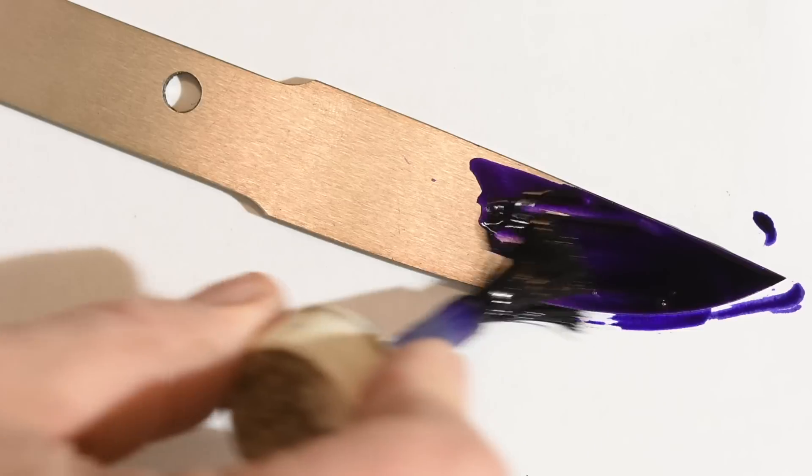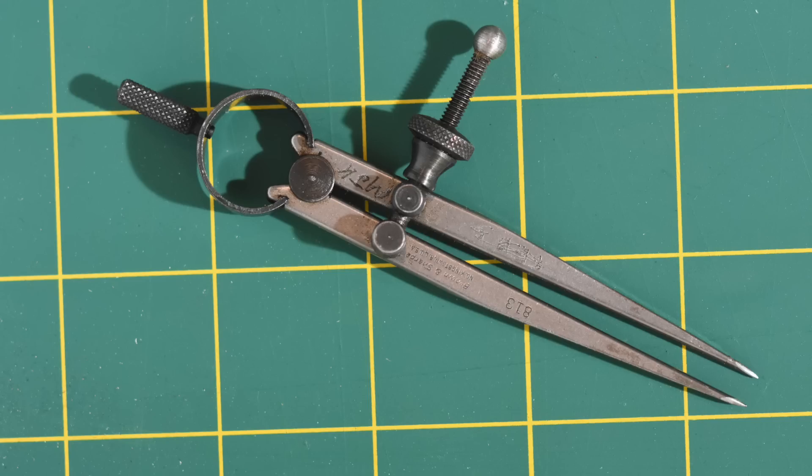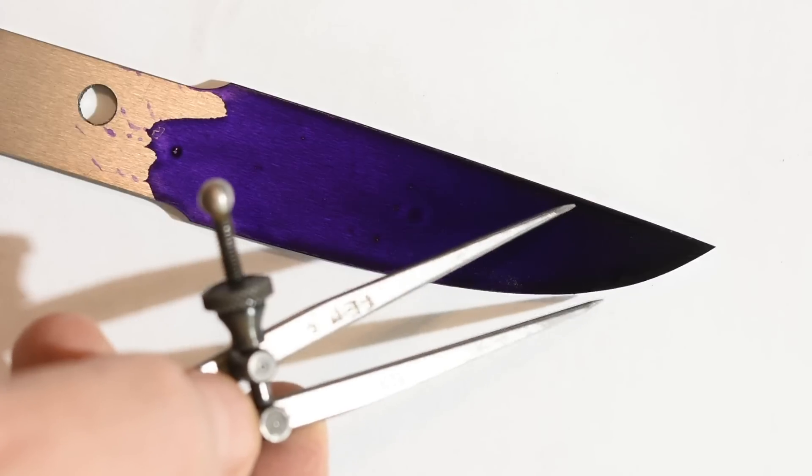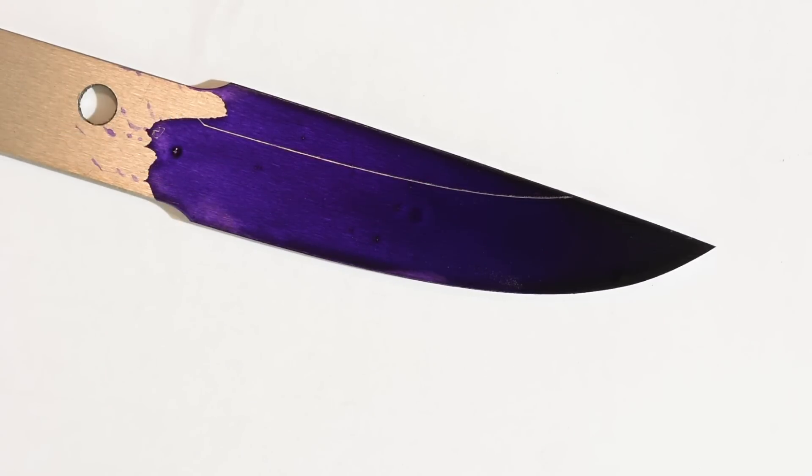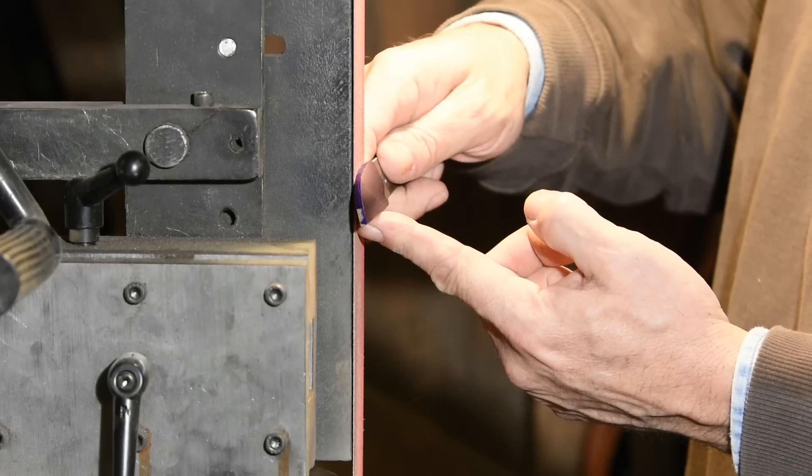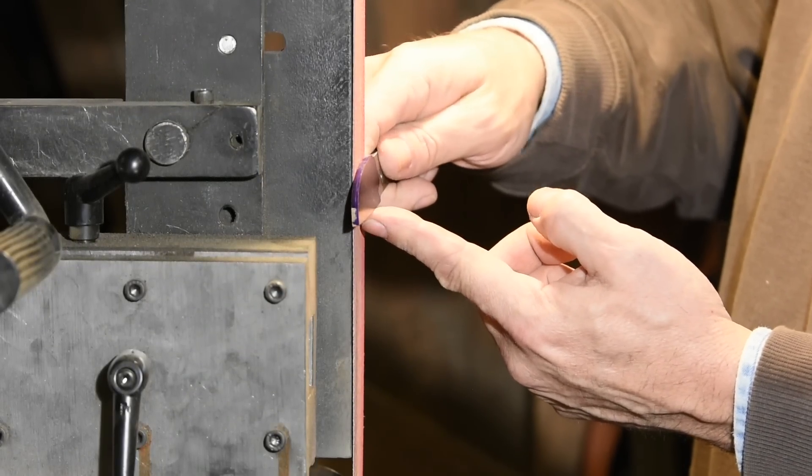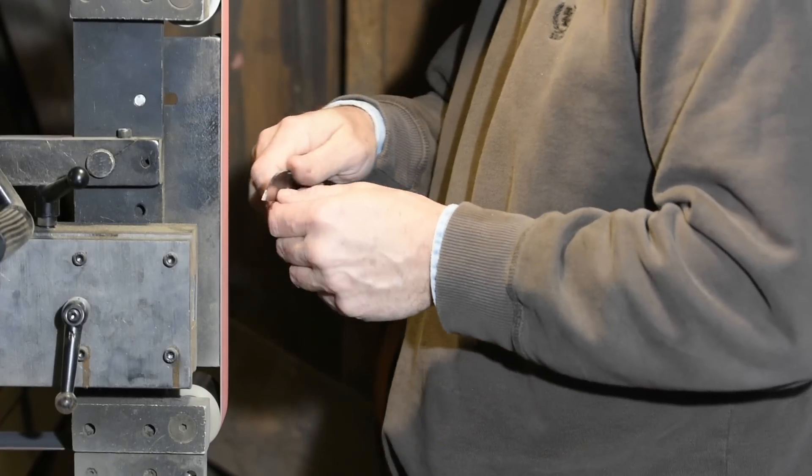Next, I'll use this blue stuff, it's called layout fluid and a divider to scribe the grind line that I'm aiming for. See how it runs parallel to the edge? As long as I maintain that parallelism, the bevel will remain exactly the same angle from one end to the other. If the bevel is skinnier here, that means the bevel will actually change angles, which I don't want to happen.